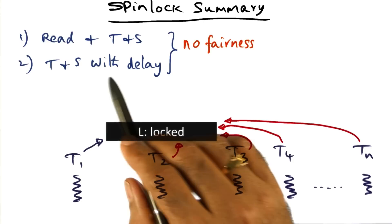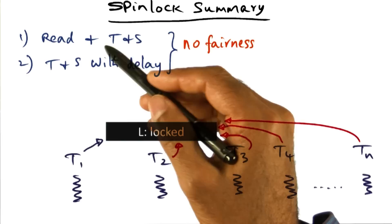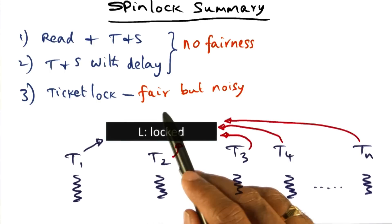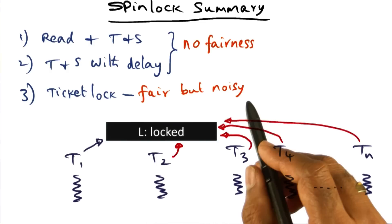All of these spin algorithms have no fairness associated with them. And if you think about the ticket lock algorithm, it is fair but noisy. So all of them are not quite there yet in terms of our twin objectives of reducing latency and reducing contention.